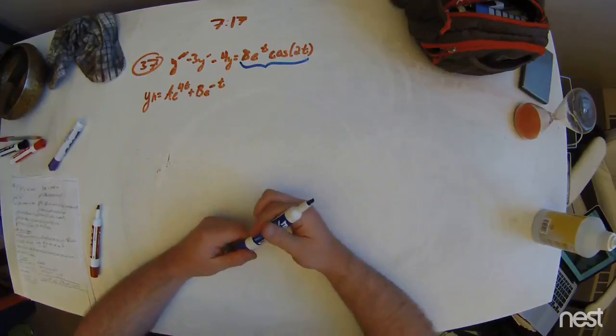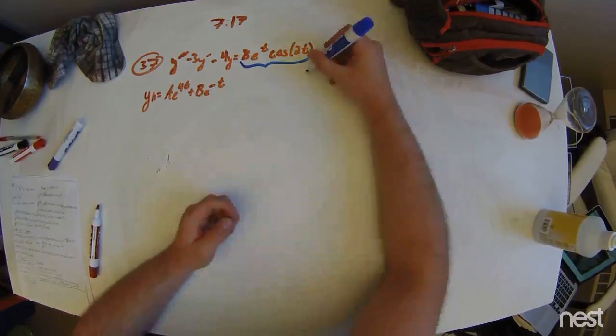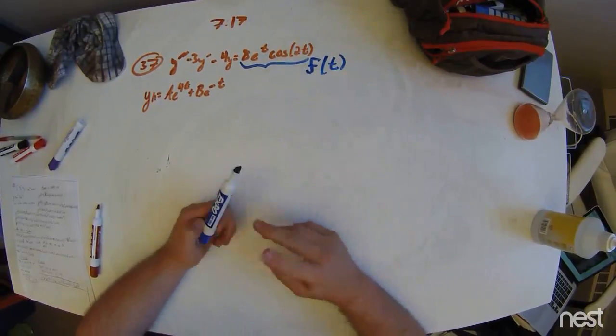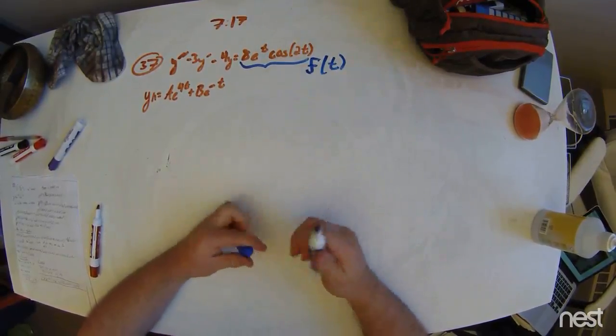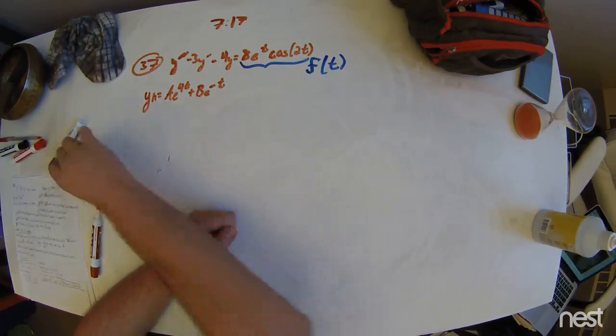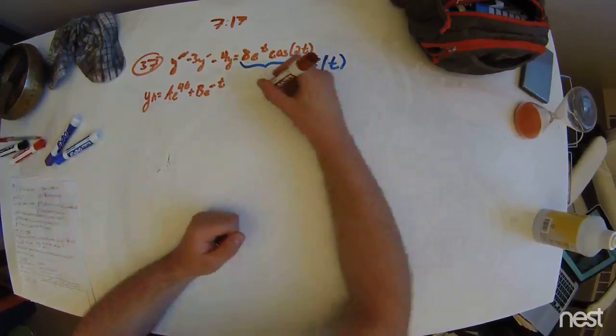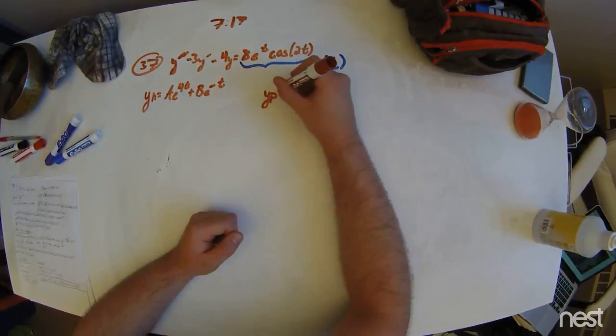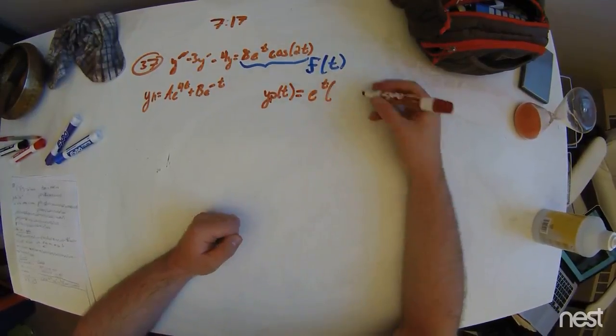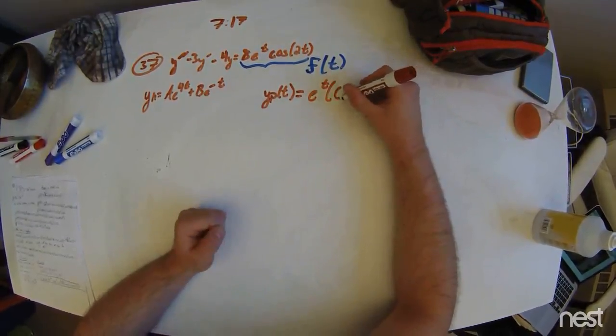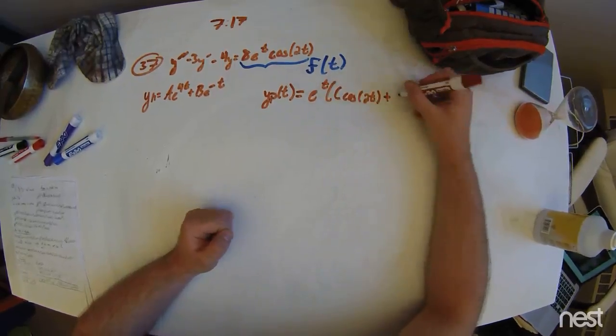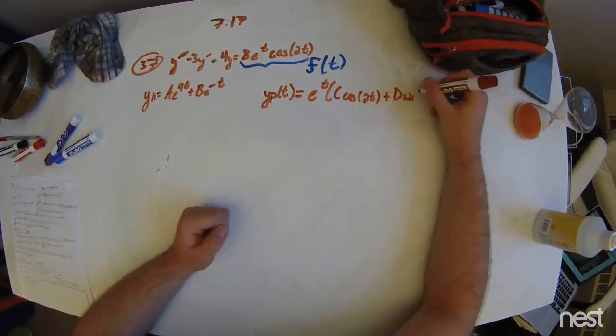If you have two functions multiplying each other in the forcing function f of t, the particular solution that you assume is their product again. However, cosine comes along with sine. So you have to write y particular as e to the t times c times cosine of 2t plus d times sine of 2t.